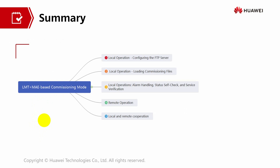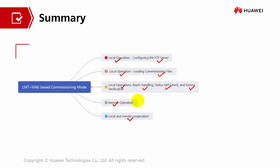The summary of this content about LMT and MAE based commissioning mode is that we have learned about: local operation of how to configure the FTP server, local operation of loading commissioning files, local operation of how to handle alarms, checking the self-check status and service verification, remote operation, and local and remote cooperation. That's all from me. Thank you, hope you enjoyed the session. Bye.